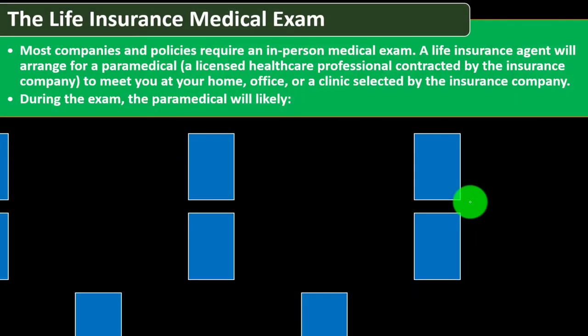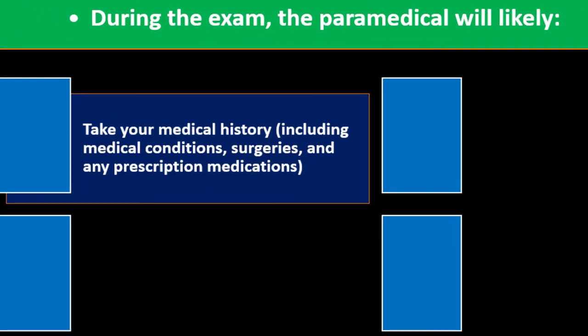Regarding the life insurance medical exam: most companies and policies require an in-person medical exam. A life insurance agent will arrange for a paramedical — a licensed healthcare professional contracted by the insurance company — to meet you at your home, office, or a clinic selected by the insurance company. During the exam, the paramedical will likely take your medical history, including medical conditions, surgeries, and any prescription medications.